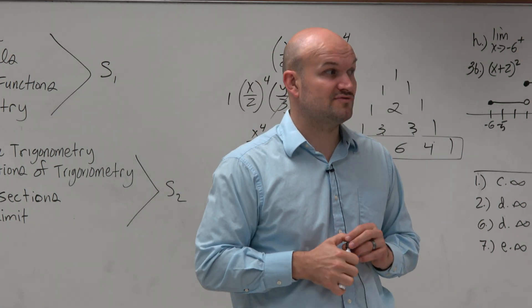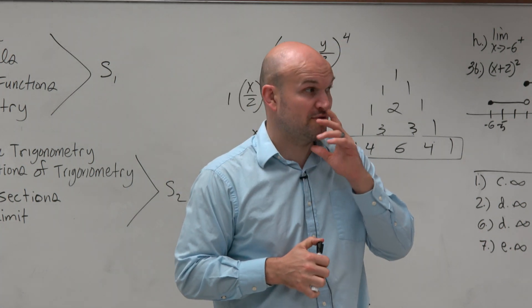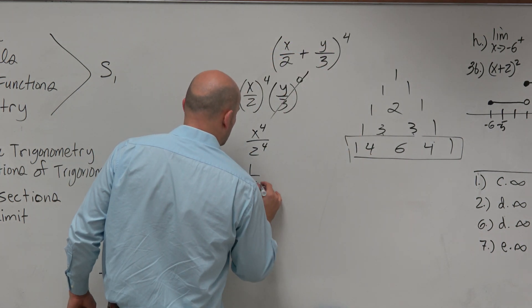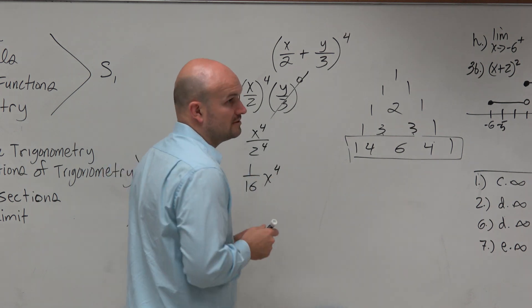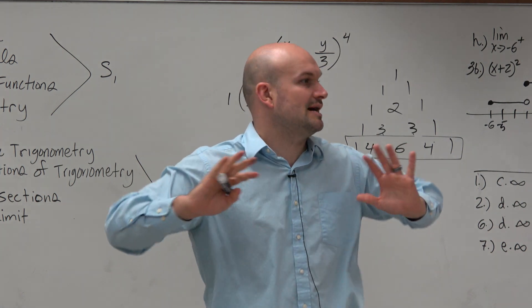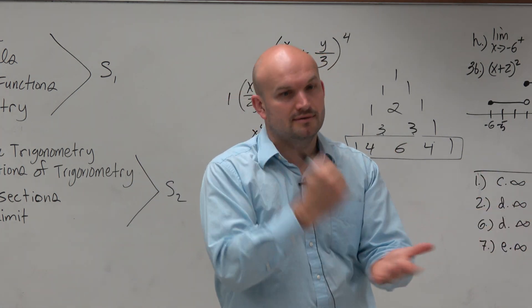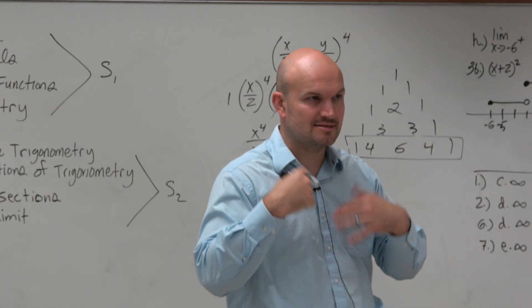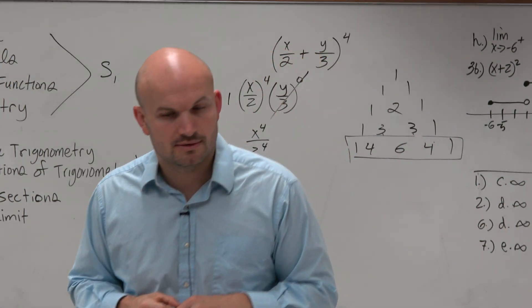So 2 squared is 4. 2 cubed is 8. 2 to the fourth, then, would be 16. So do we have an answer choice of 1/16 times x to the fourth? Yes. And you guys can see that answer is C. So I would not waste my time doing any other expansion. I noticed that first term is different. That's the easiest term to find. I would just go over that.